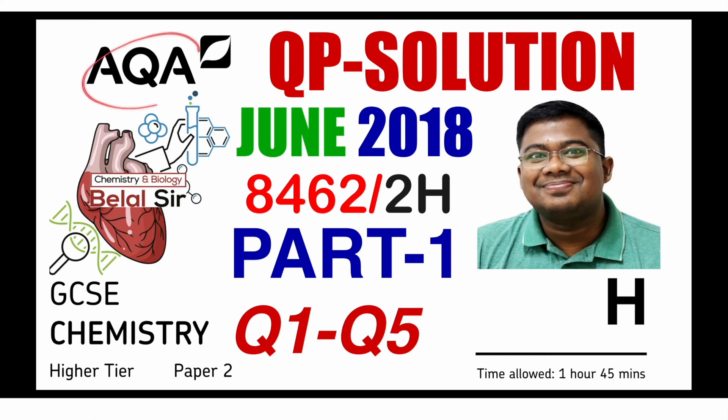Hi everyone. Today we're going to be solving AQA GCSE chemistry higher tier paper 2, June 2018 part 1. In this particular question paper we're going to be solving from question number 1 to question number 5. The part 2 video will be uploaded and they are all going to be available in a playlist.